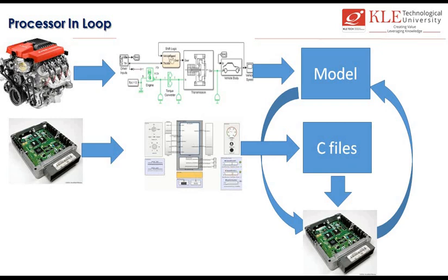Next is Processor In-Loop. I am going to model the engine in the simulation software, and I will also model the controller in the simulation software. I have the engine model, and I have a C file. I generate a hex file or a binary file out of it and dump it to the target hardware. The engine model will be running on the desktop or host machine, whereas the binary file will be running on the actual hardware. I put them together in a loop — where you can send data to the target hardware and receive feedback from it. This is what we call Processor In-Loop: actual hardware is used, but the plant model is running on the host.